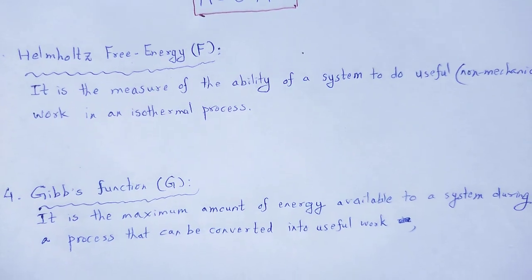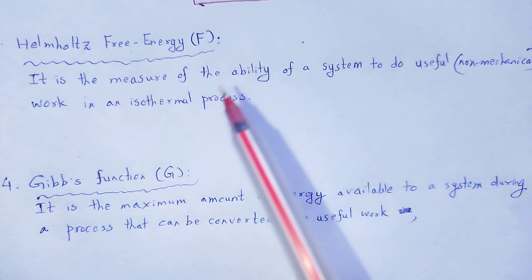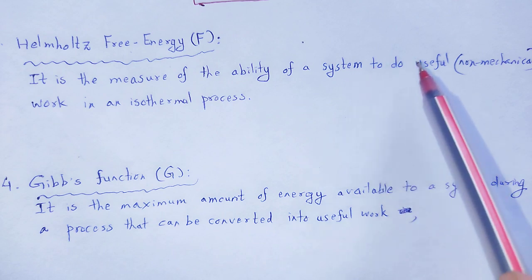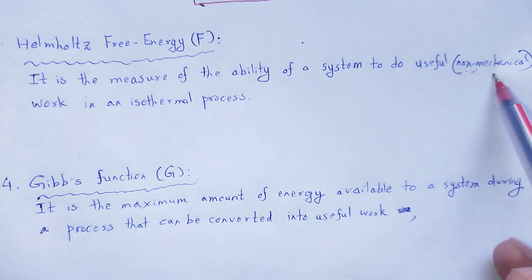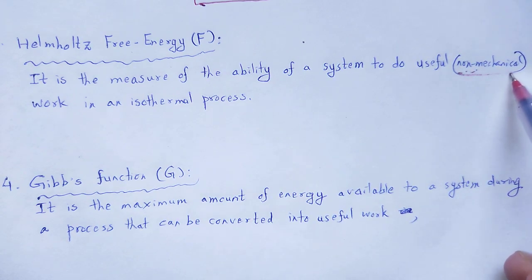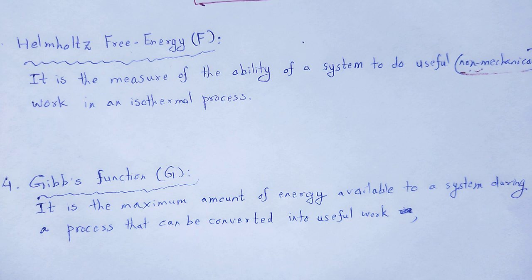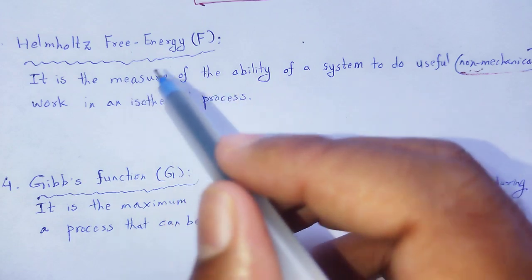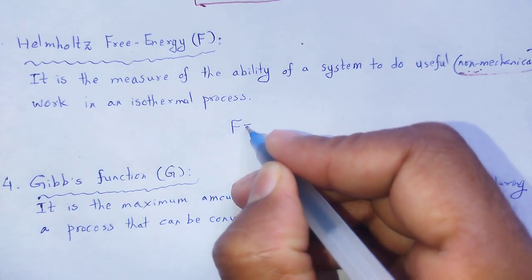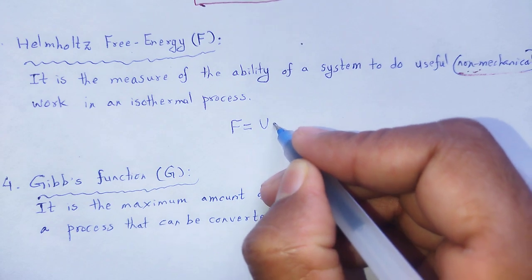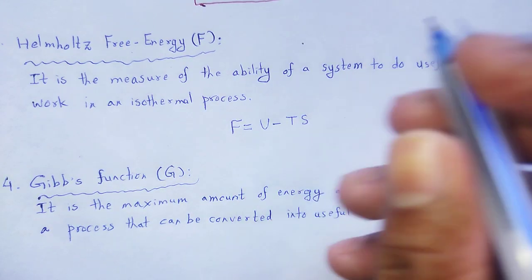Next, Helmholtz free energy. Helmholtz free energy is the measure of the ability of a system to do useful non-mechanical work, where the process within the system is isothermal in nature. Mathematically, Helmholtz free energy F equals U minus TS, where U is the internal energy, T is the temperature, and S is the entropy.